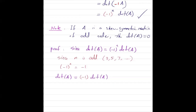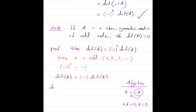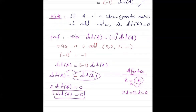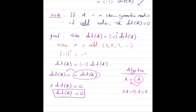Now we do a little algebra. From algebra, if you have a quantity k equal to negative k, you bring negative k to the other side and get 2k equals 0, so k equals 0. Doing the same thing here: determinant of A equals minus determinant of A, so 2 times the determinant of A equals 0, meaning the determinant of A must equal 0. We have just proved that if you have a skew-symmetric matrix of odd order, then the determinant is always 0.